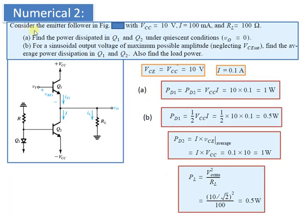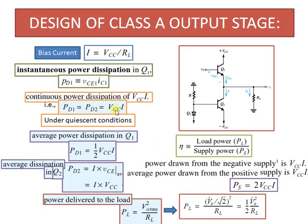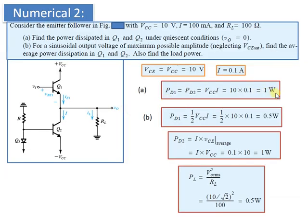Moving on to the second numerical. We again consider the emitter follower with VCC equal to 10 V, I equal to 100 milliamps, and RL equal to 100 ohms. We need to find the power dissipated in Q1 and Q2 under quiescent conditions, and find the sinusoidal output voltage of maximum possible amplitude. VCE is set equal to VCC, that is 10 V. Under quiescent conditions, PD1 equals PD2 equals VCC times I, which gives 1 watt.